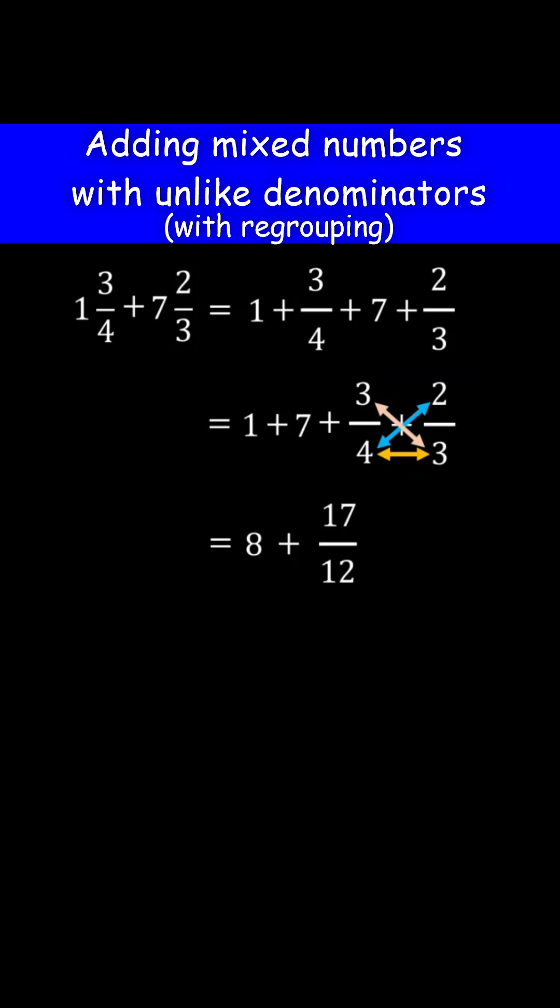Then simplify the fraction if possible. 17 over 12 is in the simplest form, so we cannot simplify it. But it is an improper fraction.